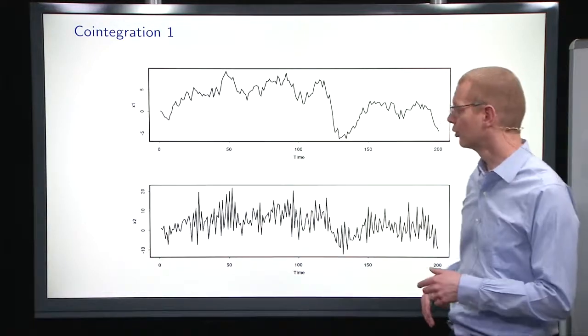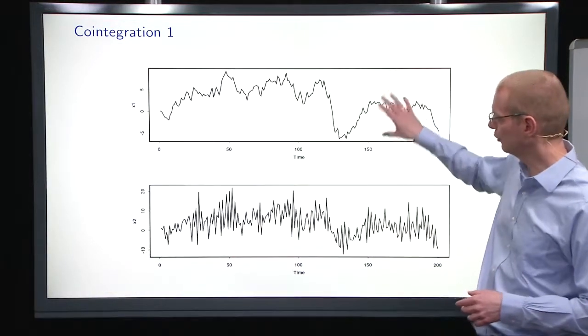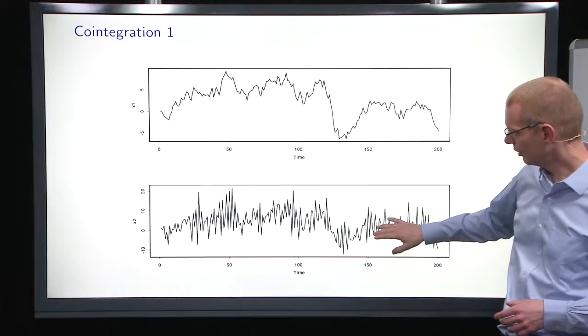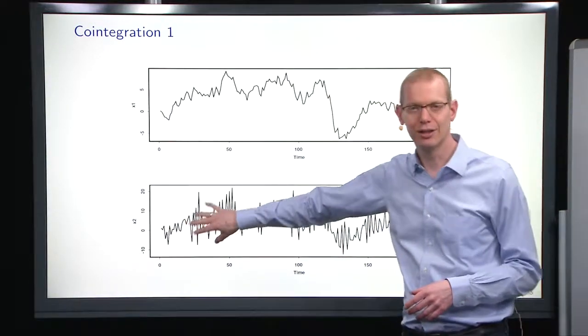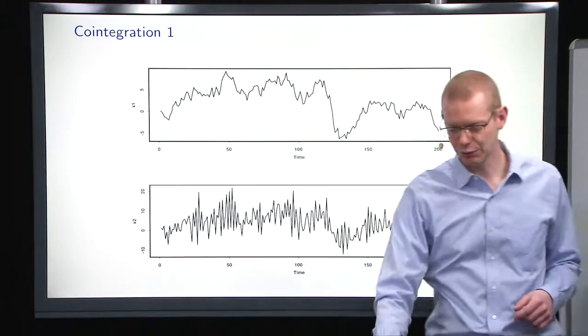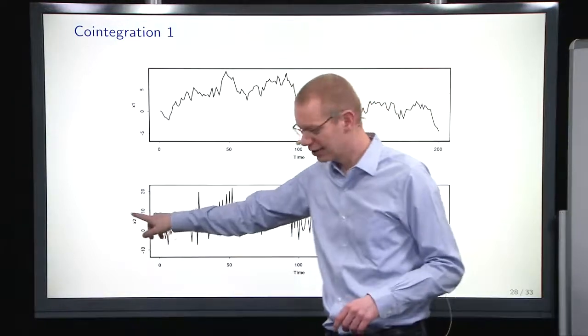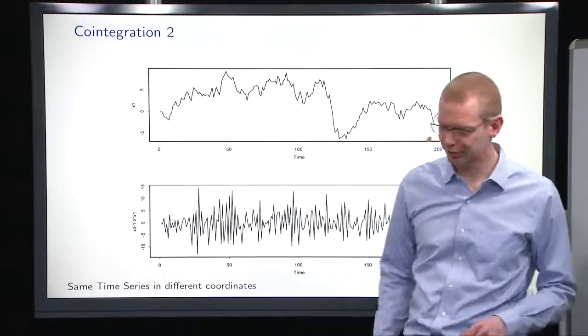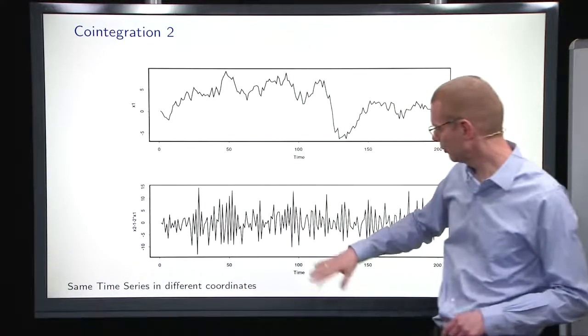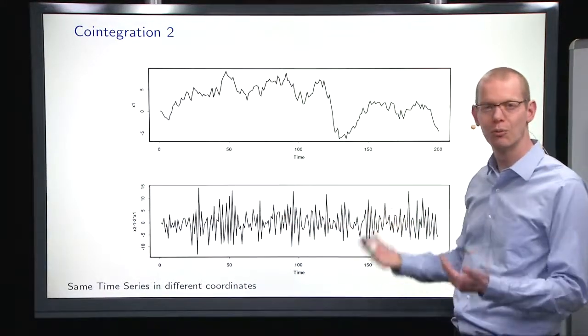Another thing is so-called cointegration, where if you have two processes here, where if you look at one and you look at the other, you see that this down here is superimposed on top of a function of the other. So then, if you translate X2 rather than plotting X2 down here as the other process, you subtract the one and something from the first one up here, then you see something that is more like white noise.